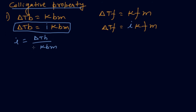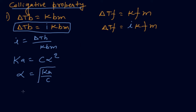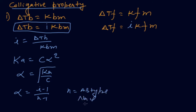If asked to find i, you can use i = ΔTb / (Kb·m). You also know from Ostwald dilution law that Ka = cα², so α = √(Ka/c). In the case of dissociation, α = (i - 1)/(n - 1), so you can find i. For an AB-type salt, n = 2 giving i up to 2; for AB₂-type salt, n = 3.